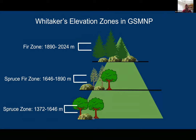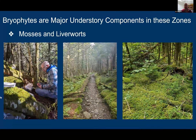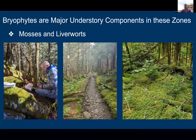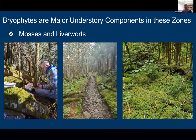Back in the 1950s, an ecologist by the name of Whittaker defined all the different elevation zones by their dominant tree stand, with the highest peaks being the spruce zone, the spruce-fir zone, and the fir zone. Bryophytes are major understory components — specifically mosses and liverworts — which completely cover the landscape and provide key ecosystem services such as habitat for macro and micro invertebrates, nesting material for birds and squirrels, carbon sequestration, seedling protection from washout and drought stress, and erosion prevention.